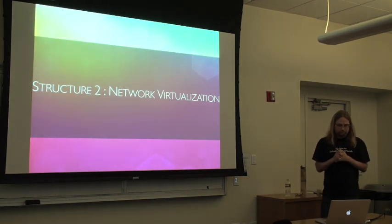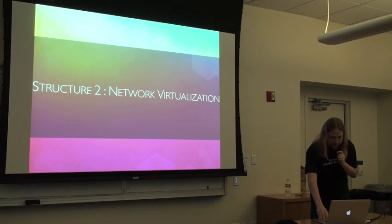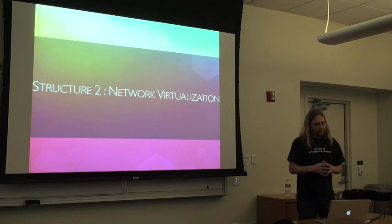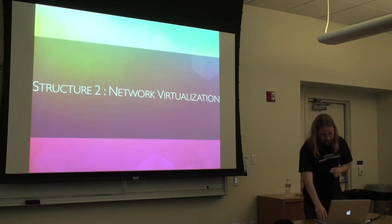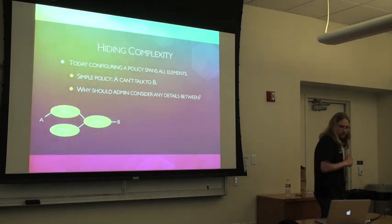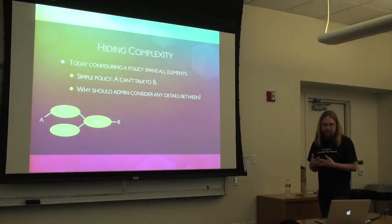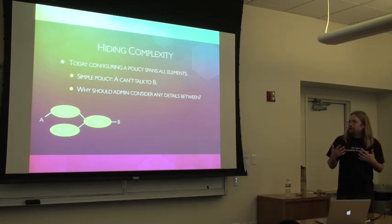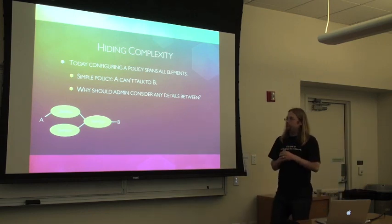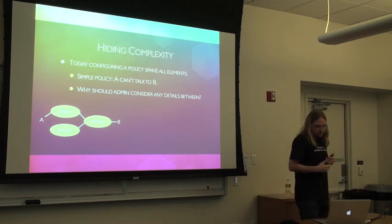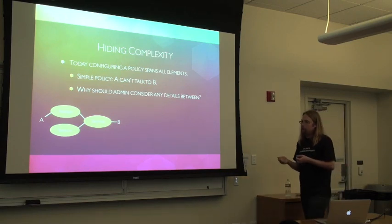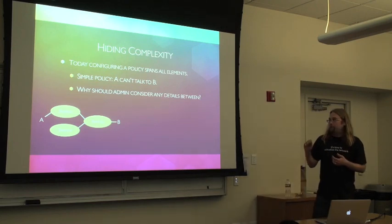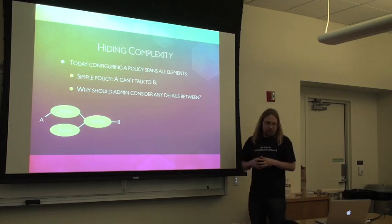So let's look at another structure I've stumbled into, which is even more useful in terms of establishing modularity and increasing simplicity in the network. So think about how we configure networks — it's pretty ugly actually. The network policy configuration, as discussed earlier, tends to span over all the elements you have in the network. So just think about a simple policy of A not being allowed to talk to B. In which element would you kind of enforce this policy? And what would you do if either one of them actually changes their attachment point within the network? Once a client asked, why should network admins even care about this sort of low level detail?